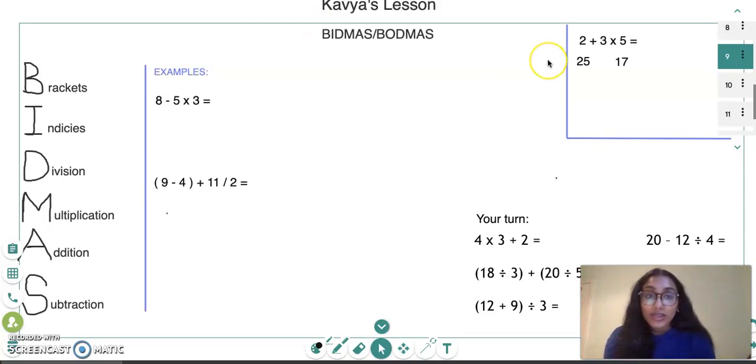Let me give you a quick example. If you look at my mouse over here, it says 2 plus 3 times 5. Now a lot of people make this mistake—it's so easy to make. A lot of people would do 2 plus 3, which is 5, and then 5 times 5 to get 25. So many people would think 25 is the correct answer, but actually it's wrong.